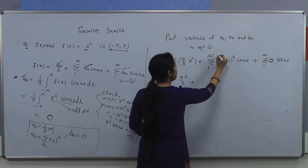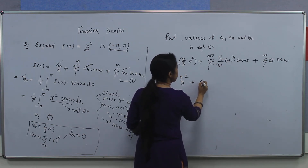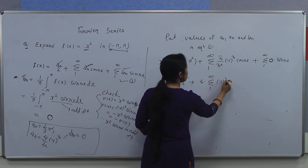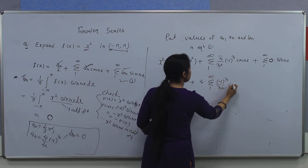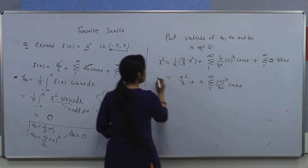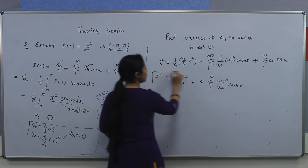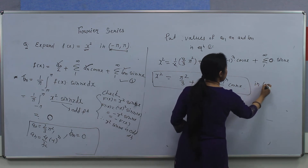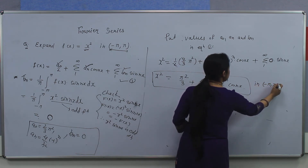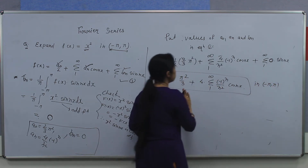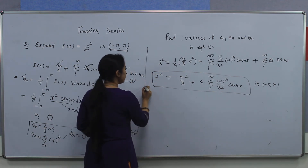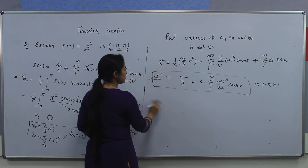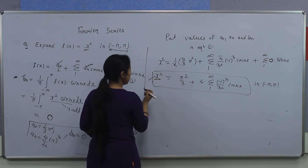Since constants can be taken out, it will be 4 times summation 1 to infinity of minus 1 to the power n divided by n squared, times cos(nx). This is the Fourier series of x squared in the interval minus pi to plus pi.